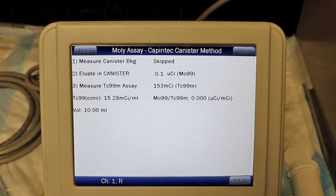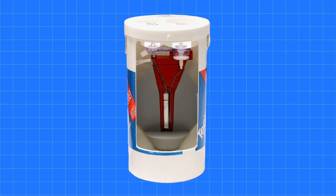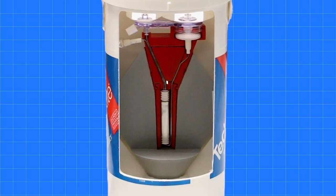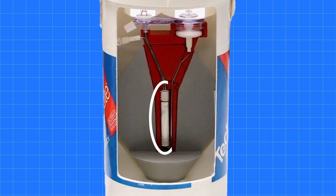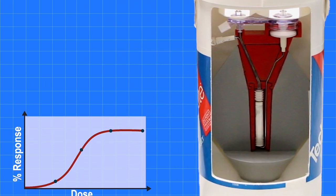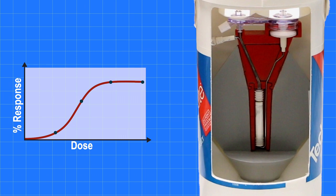If the reading exceeds the limit prescribed by the NRC, then the eluate is contaminated. Molybdenum-99 contamination is usually caused by migration of the molybdenum-99 in the alumina column with successive elutions. The amount of molybdenum-99 which is eluted with the technetium-99M should be as small as possible because the contamination by the longer-lived radionuclide increases the radiation dose without providing any benefit to the patient.